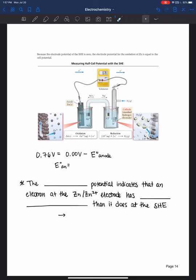We assign the standard hydrogen electrode zero. That's the cathode because reduction's occurring at the cathode. We used our voltmeter for the cell and found the cell potential to be 0.76 volts. We can work backwards to find what the electrode potential for the anode would have been, and we get negative 0.76 volts. That negative 0.76 volts indicates that an electron at the zinc/zinc²⁺ electrode has higher potential energy.